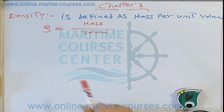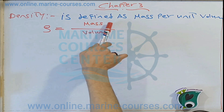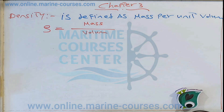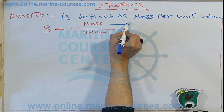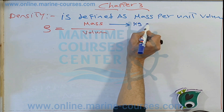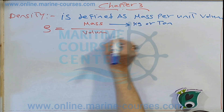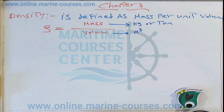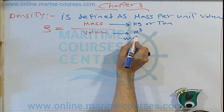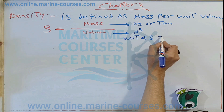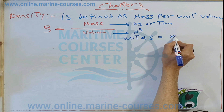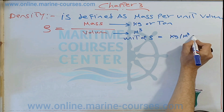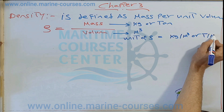If I want to find the density of any material, I have to find the mass and the volume of that material. The unit of mass is kilogram or ton, and the unit of volume is cubic meter. So the unit of density equals kilogram per meter cubed, or ton per meter cubed.